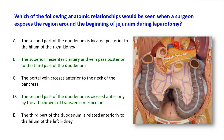Which of the following anatomic relationships would be seen when a surgeon exposes the region around the beginning of the jejunum during laparotomy? This is the region in question. Here you can see the C-shaped duodenum, and this is the fourth part of the duodenum, becoming intraperitoneal and forming the jejunum. The question is asking about the relations that can be seen around this region in the upper abdominal viscera.